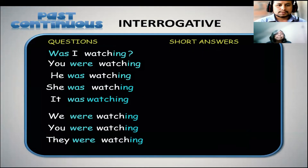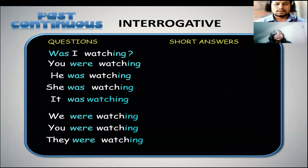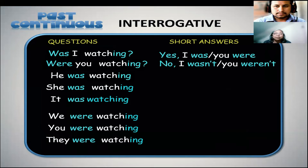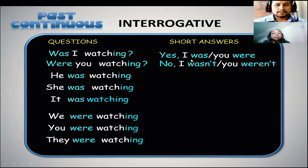And now for questions, we have a different place for the subject and the verb 'to be' in the past. 'I was watching' becomes 'Was I watching?' So we need to reverse the position of those. 'You were watching' becomes 'Were you watching?' Not only does the position change — in addition, it changes the intonation, because for questions we need to give a little stress. The short answers are: Yes, it was. You were. No, I wasn't. No, you weren't.